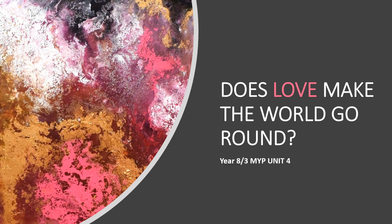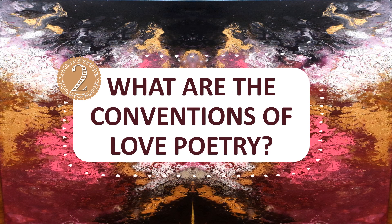Hello and welcome to the presentation for the poem that we're going to be looking at in detail for this lesson. 'A Red Red Rose' — we are looking at this poem as a way to practice our poetry analysis as part of our 'Does Love Make the World Go Around' unit. So in this lesson we are thinking about the conventions of love poetry.